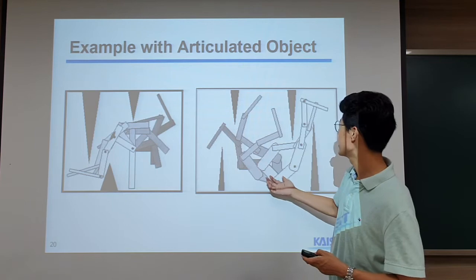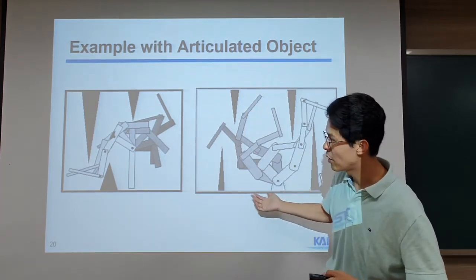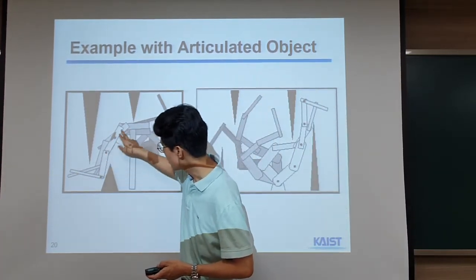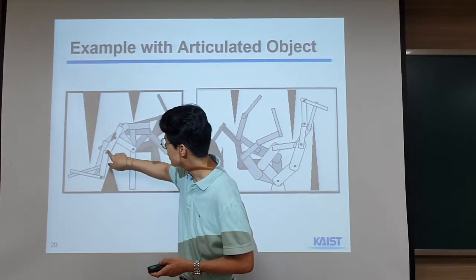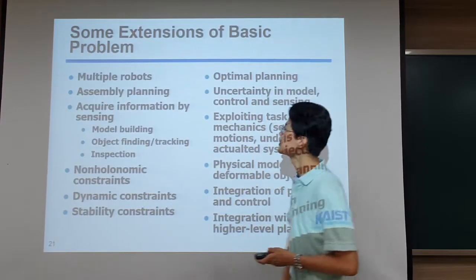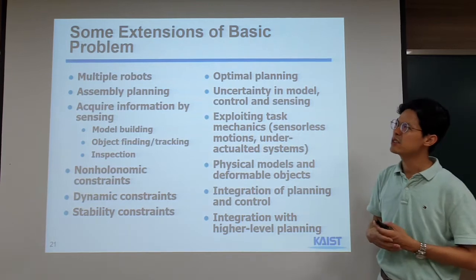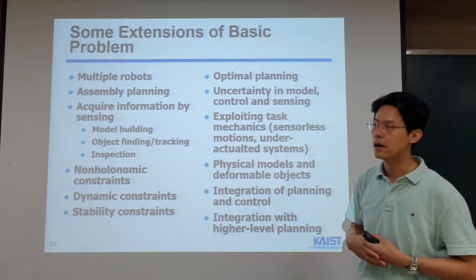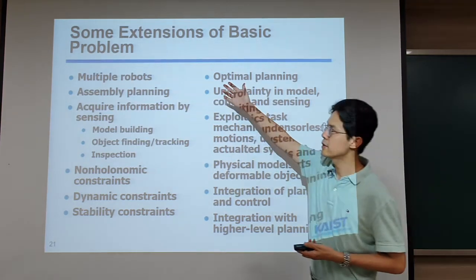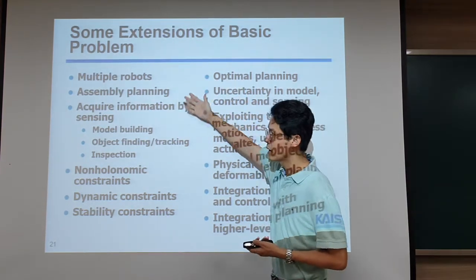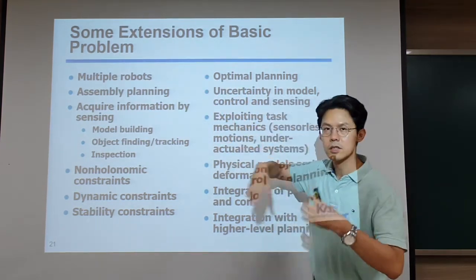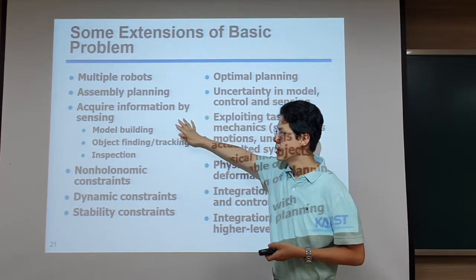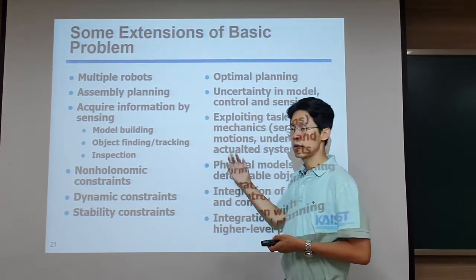Here is a very simple setting of an articulated robot with two joints, moving from one configuration to another. There are actually a lot of extensions to this basic problem. We can consider multiple robots, and we can also move the robot to acquire information by sensing the environment and building a model.